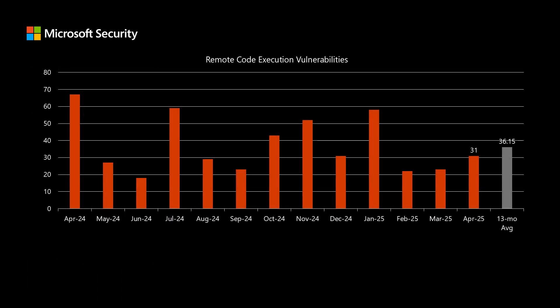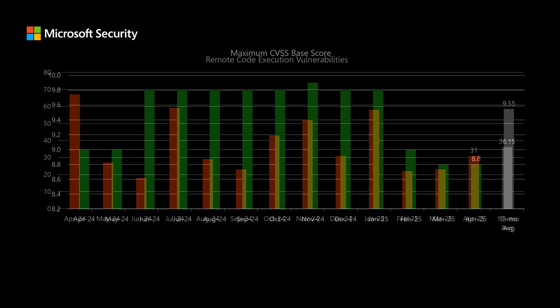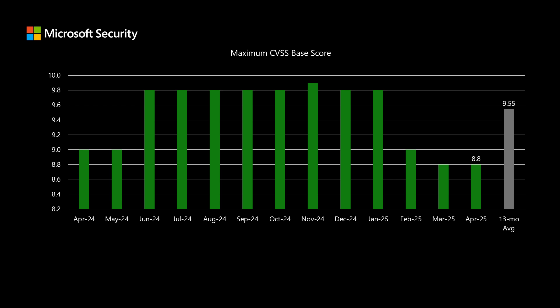Before I dig into today's release, I like to compare it to the previous 12 months to see how it stacks up. There are 123 newly disclosed vulnerabilities in this release. Of those, 31 fall into the remote code execution impact — that's a little bit lower than average over the past 13 months, where we've been averaging just over 36. Next, we'll talk about scoring, where Microsoft uses the Common Vulnerability Scoring System, or CVSS.